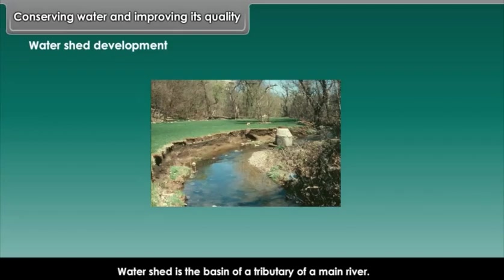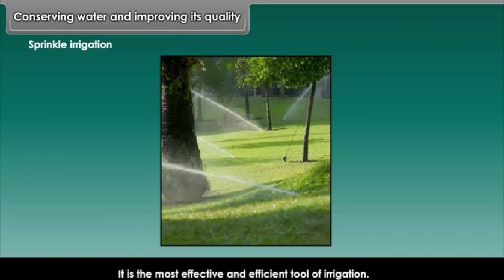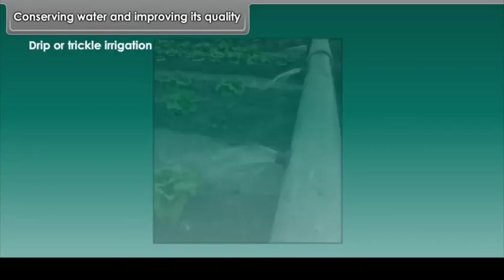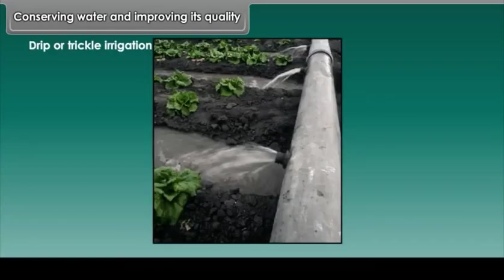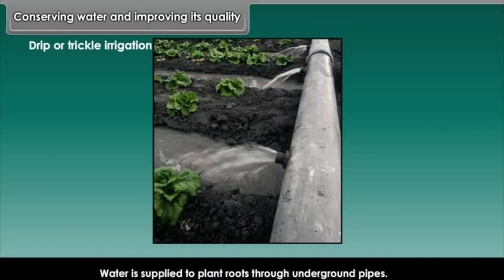Watershed development. Watershed is the basin of a tributary of a main river. Sprinkle irrigation is the most effective and efficient tool of irrigation. Drip or trickle irrigation is another type of irrigation which is used to conserve water. Water is supplied to plant roots through underground pipes.